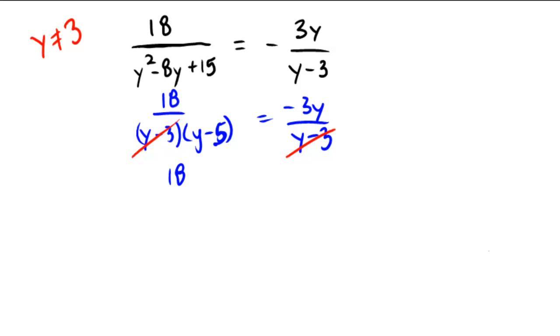Okay, so what do we have? We have 18 over y minus 5 equals negative 3y. Might as well treat that as over 1. Now cross multiplication would give us 18 equals negative 3y times y minus 5.